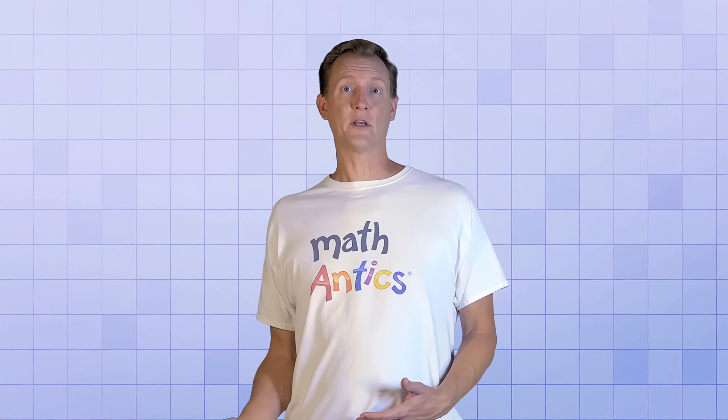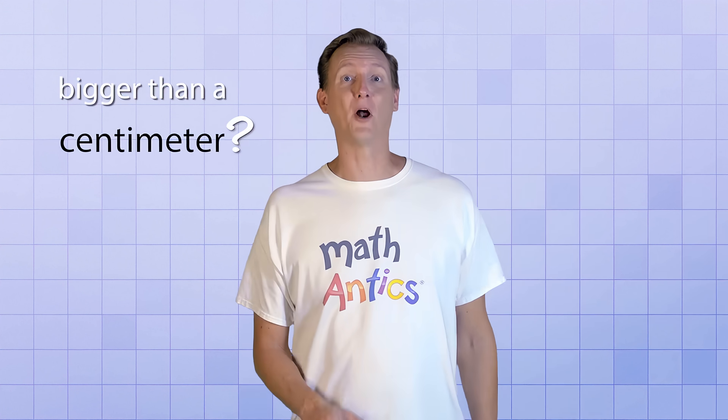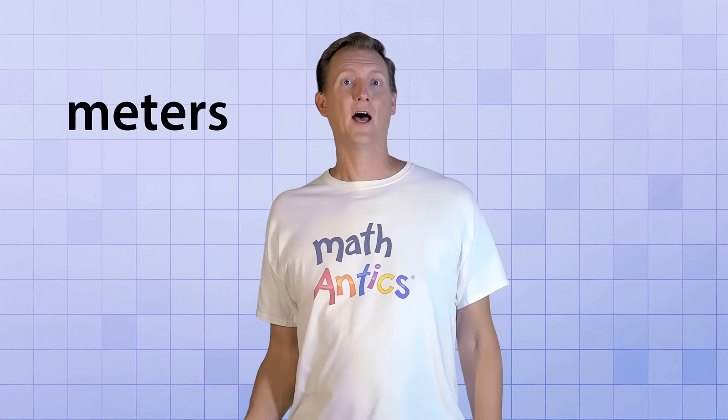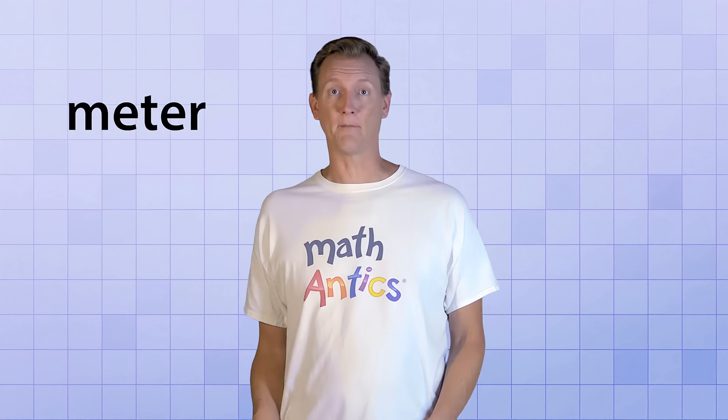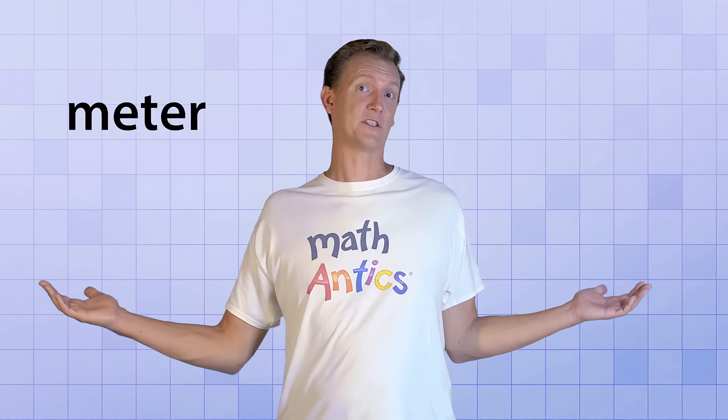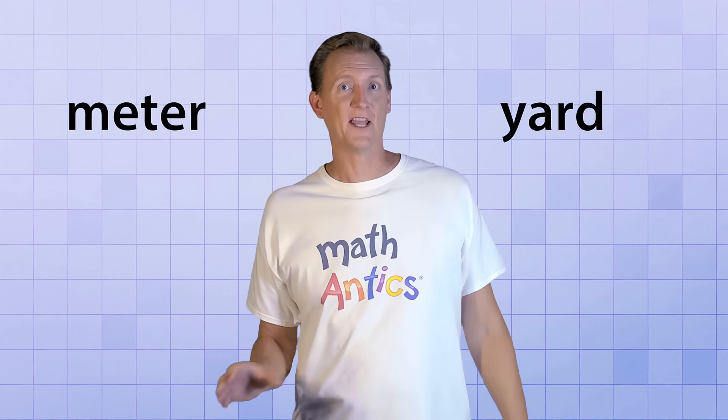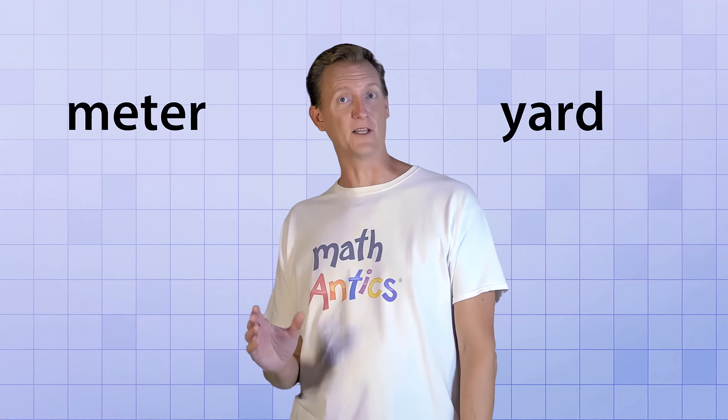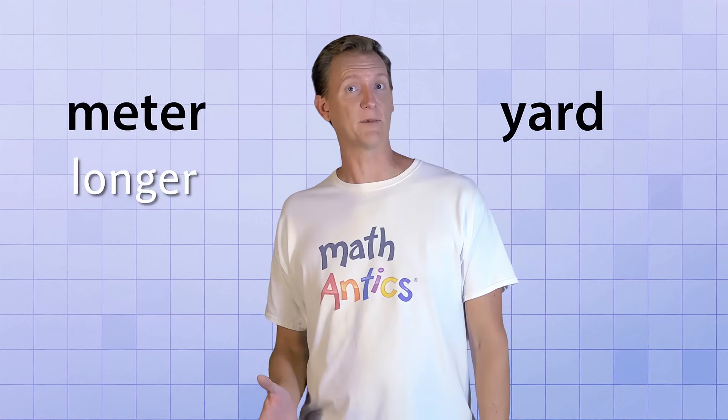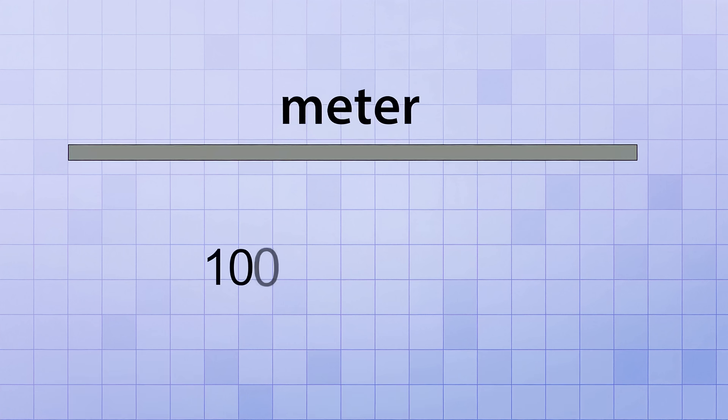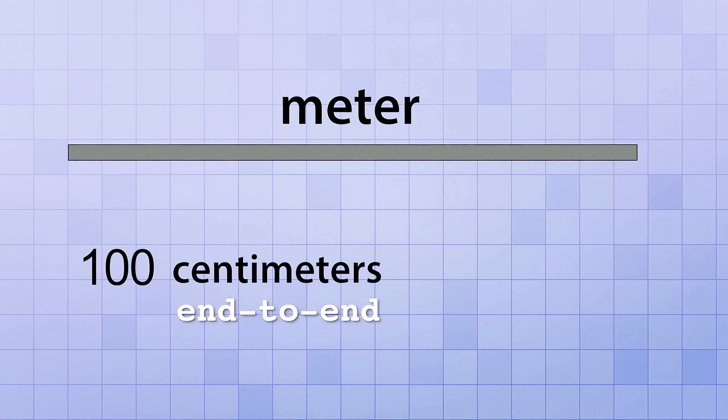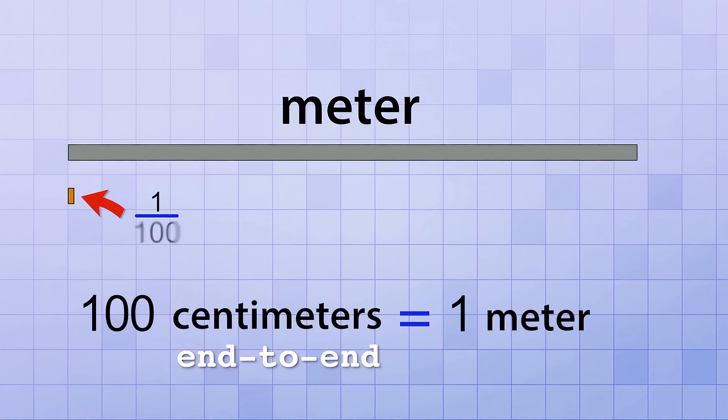Okay, but what if we need to measure something bigger than a centimeter? No problem. We can just use meters. A meter is a unit of distance that's about this long. That looks similar in length to a yard, doesn't it? It turns out that a meter is just a little longer than a yard, approximately 10% longer. But the important thing to know about a meter is that it's the exact distance you'd get if you took 100 centimeters and placed them end to end. Yup, 100 centimeters equals 1 meter, which means that a centimeter is 1 one-hundredth of a meter.